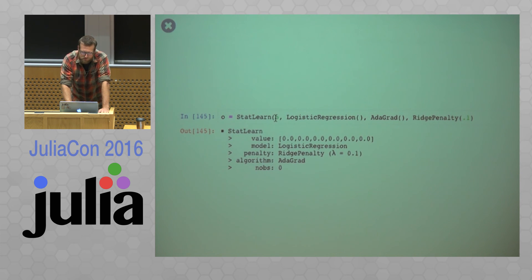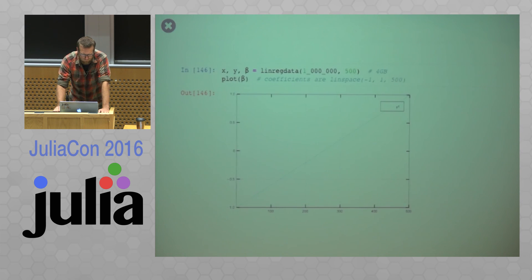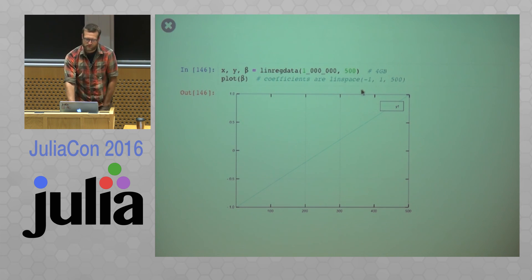So here I'm looking at an example here. So this is just simulated data, but I'm generating a lot of it, so linreg data is just a little function generating linear regression data. So this X matrix, our design matrix, is going to be 1 million by 500, so I have 500 predictors. This thing is about 4 gigs in size, and I'm going to plot the coefficients here. So the coefficients are just basically the linspace of negative 1 to 1, and there's 500 of those things.